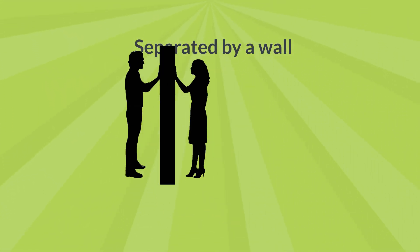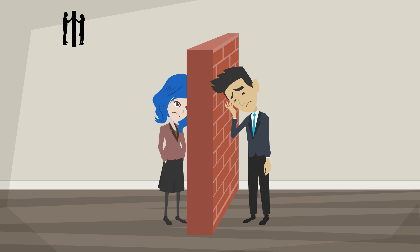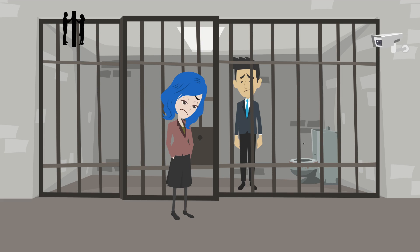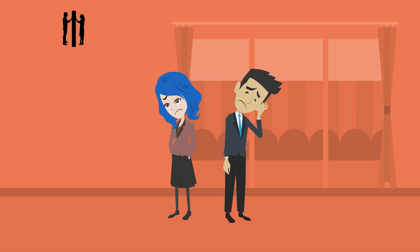Separated by a Wall: Some people — usually a man and woman — are separated by walls, windows, or other barriers. The couple is stopped by some other means represented by the wall, whether it's a physical cage or some kind of cell, or some form of emotional separation such as relationship issues.